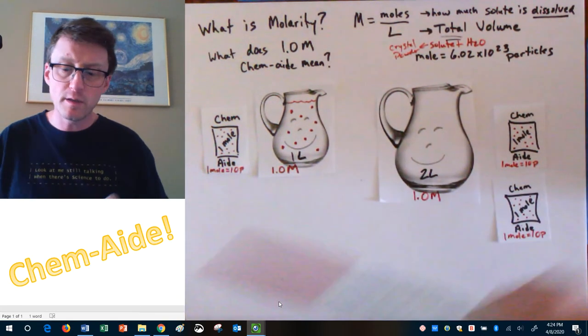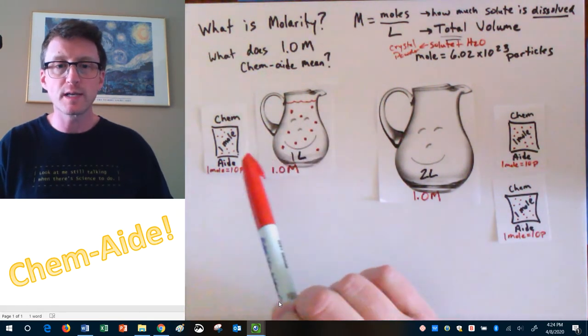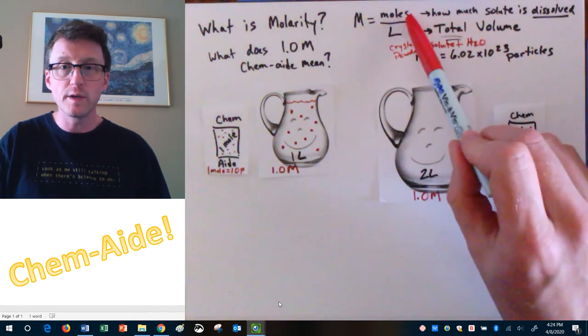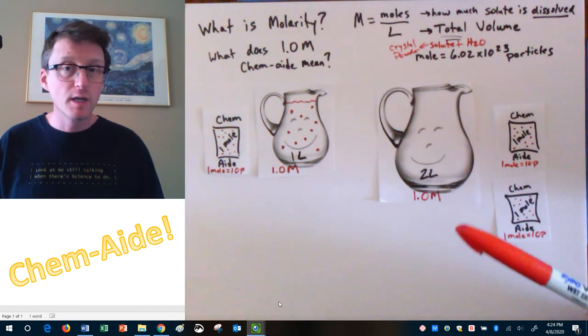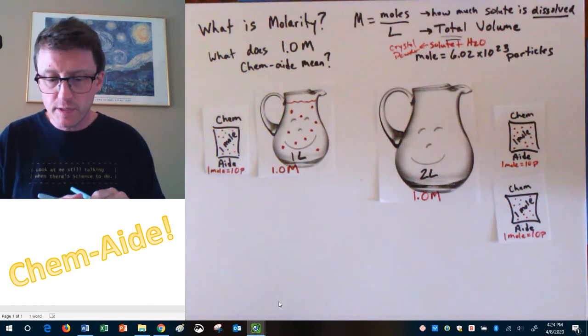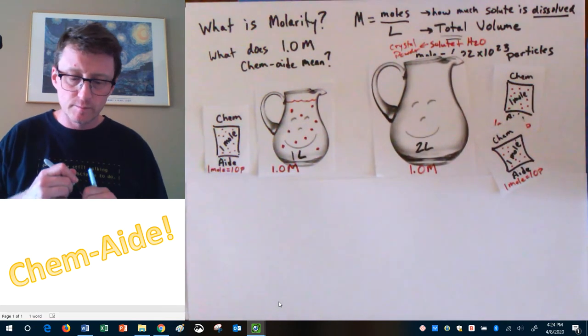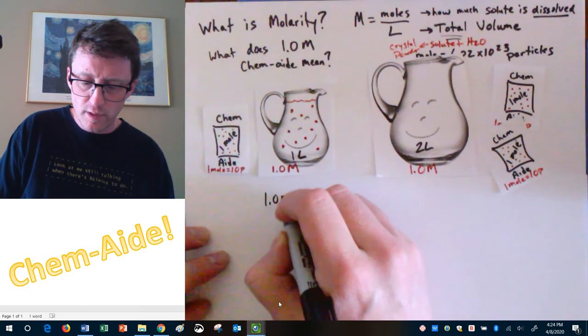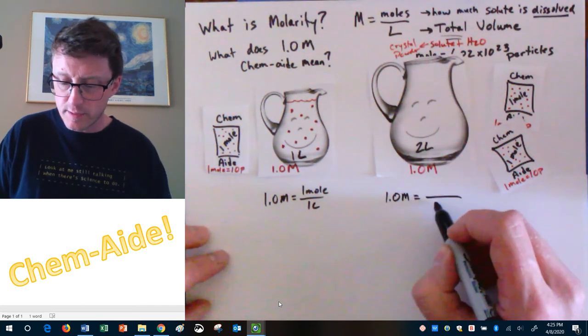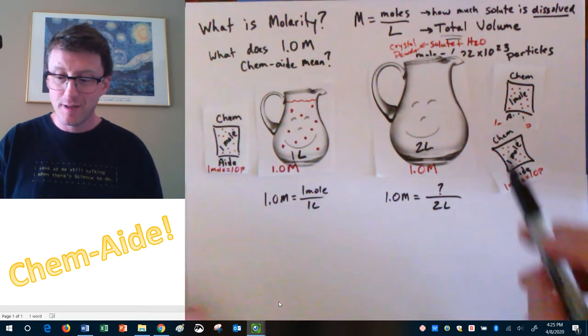Now we actually don't know how much liquid is in there, but we do know that the liquid plus the solute, the total volume, the solute in this case, the solute is our crystals of powder that we are dissolving, plus the solvent, which in this case is going to be water. Solute plus the water put together is one liter. Now, how many particles are floating around right now in our container? We have 6.02 times 10 to the 23rd. How am I showing that? Remember, one mole, 10 particles. So I need to draw 10 particles in my container. This is a one molar solution of Chem-Aid.